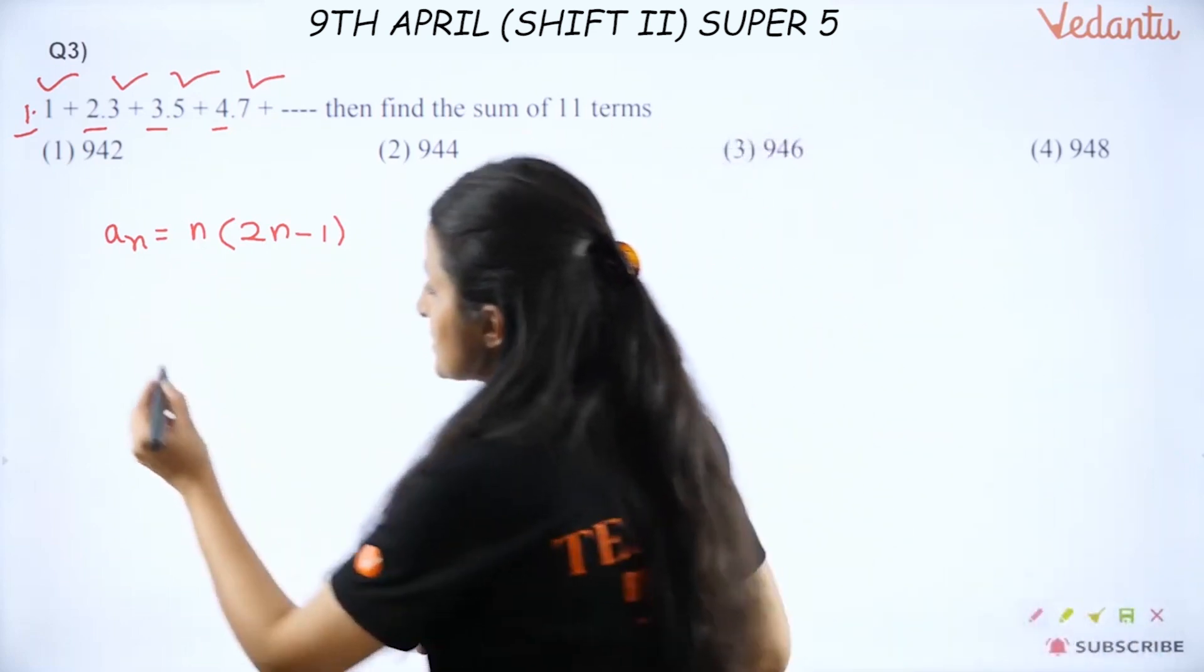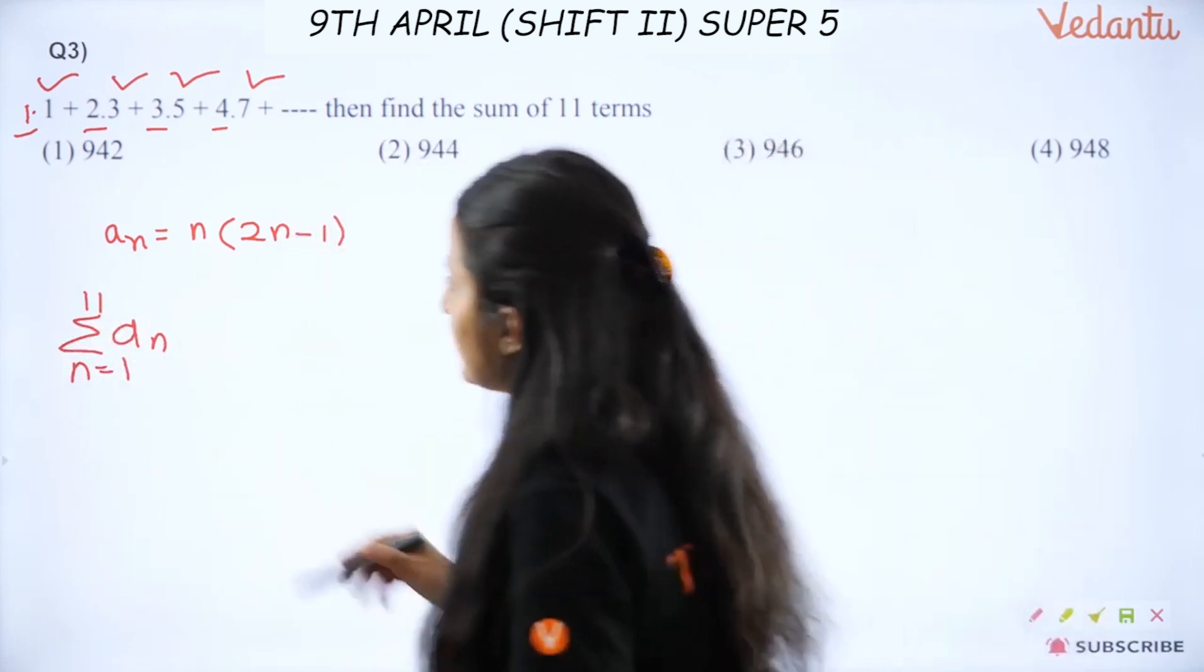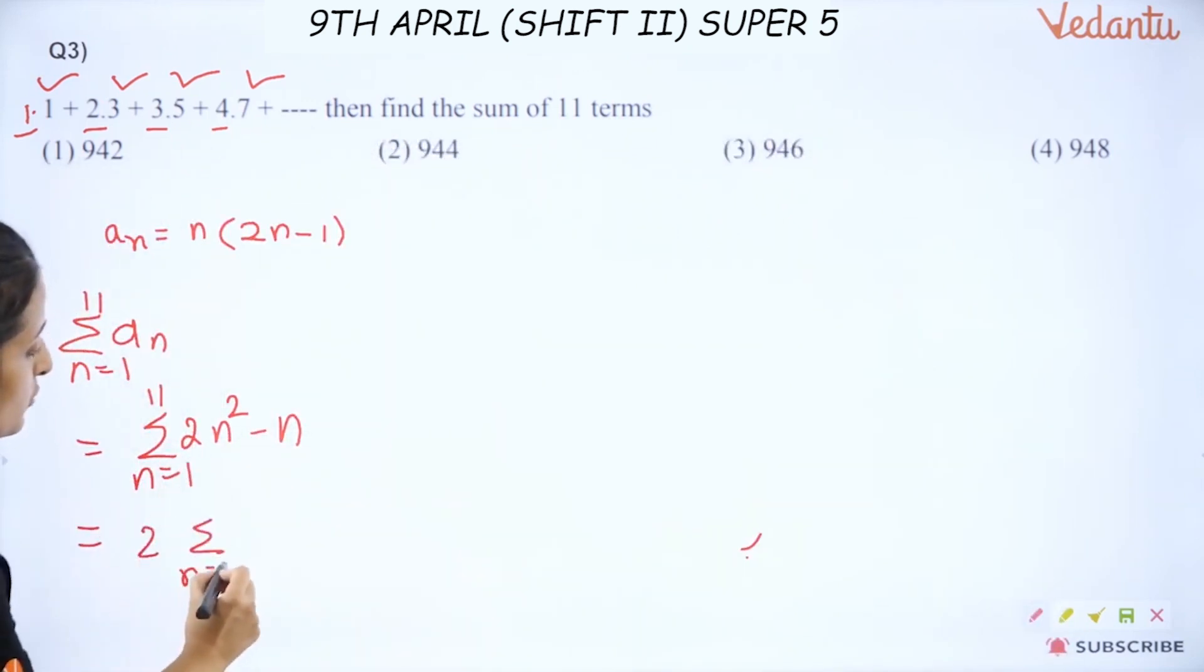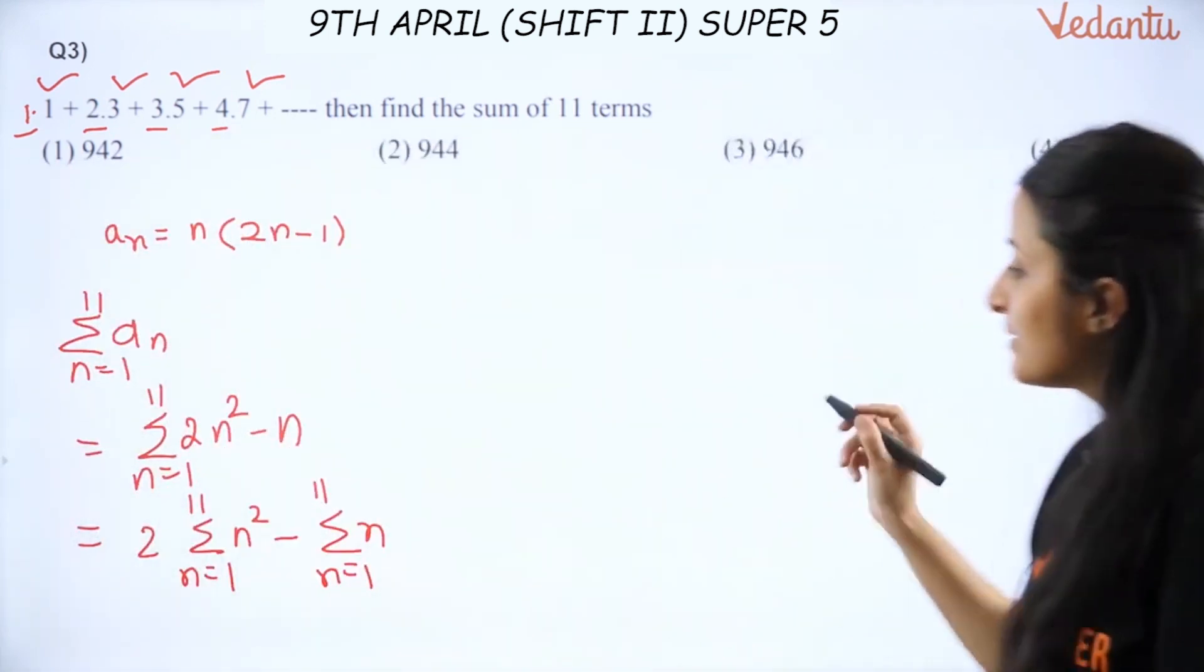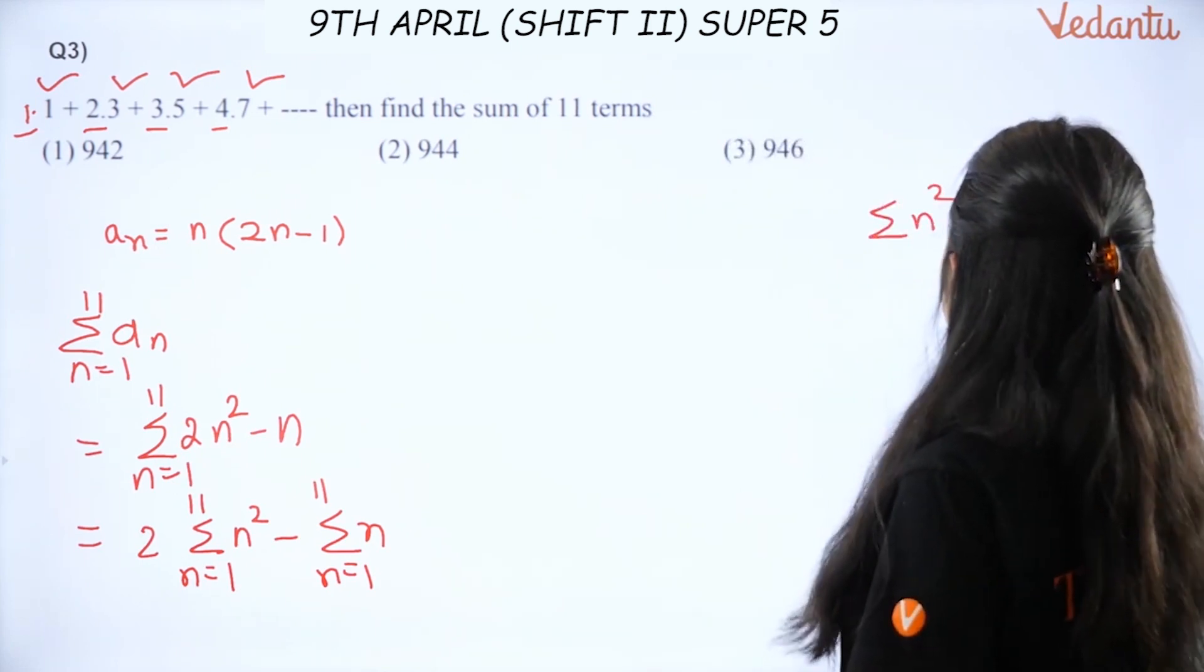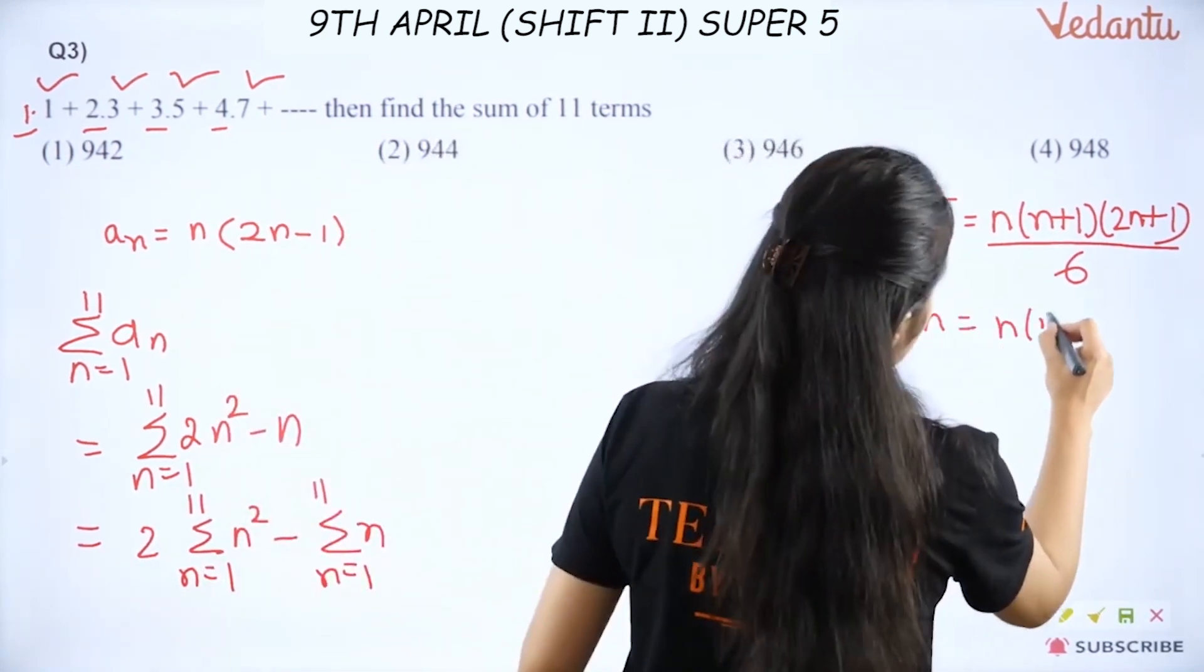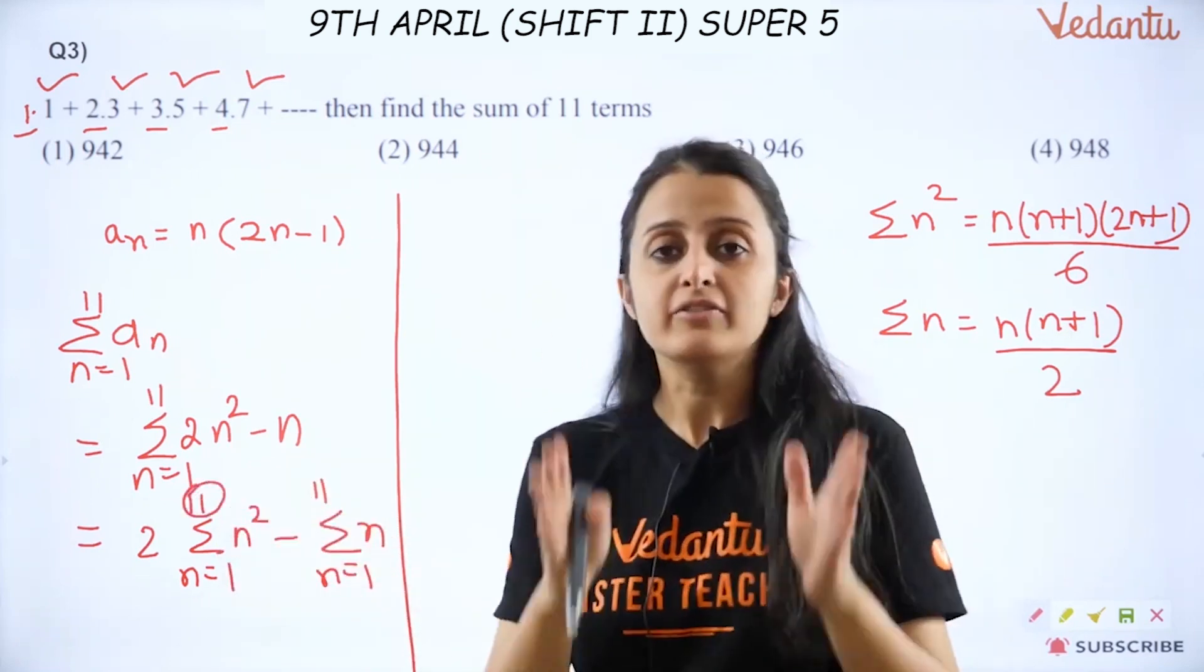Once you have decided about this pattern, now you have to find the sum of eleven terms. So I want to know what is Σaₙ when n moves from 1 to 11. So putting values here, I will get Σ(n=1 to 11) of n(2n - 1), which is 2n² - n. Now this becomes, if I separate them out, twice of Σ(n=1 to 11) n² minus Σ(n=1 to 11) n. Now what formula should I use? Simple. Σn² = n(n+1)(2n+1)/6 and Σn = n(n+1)/2, where n is the finite number of terms that I am taking.